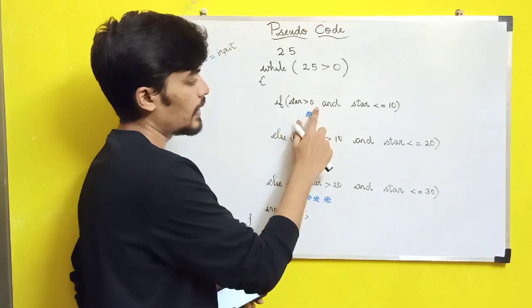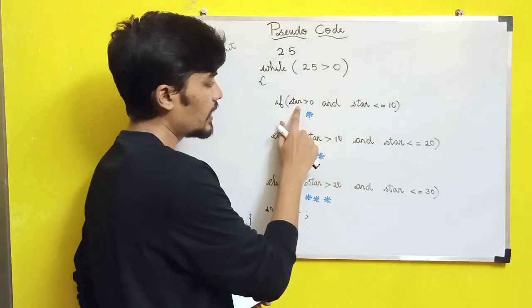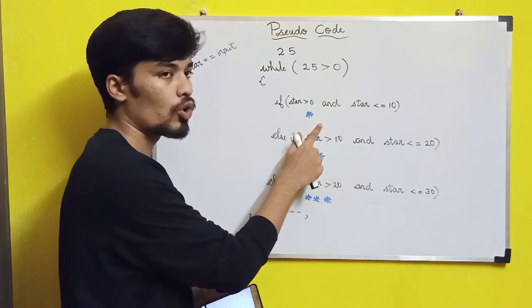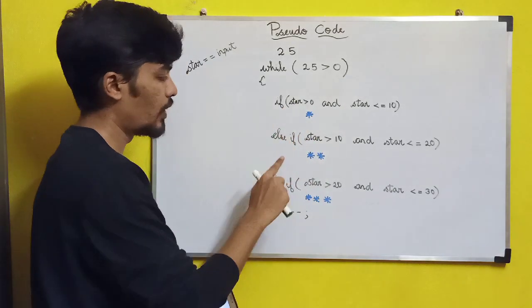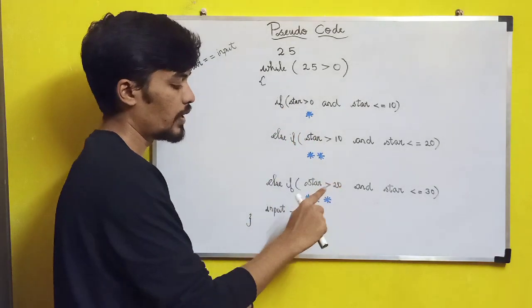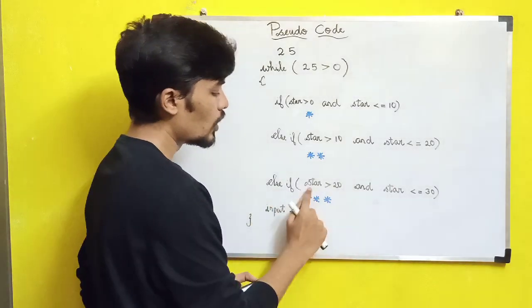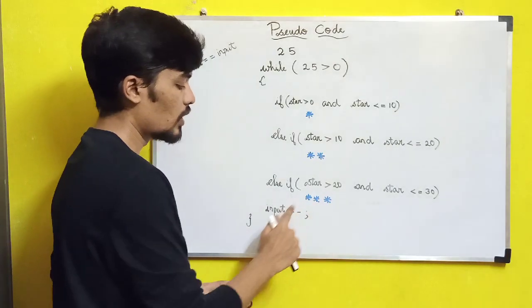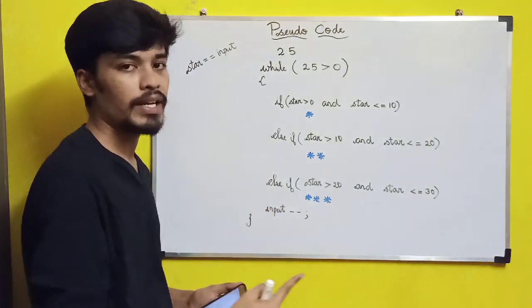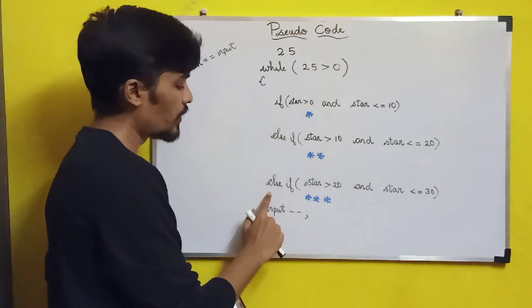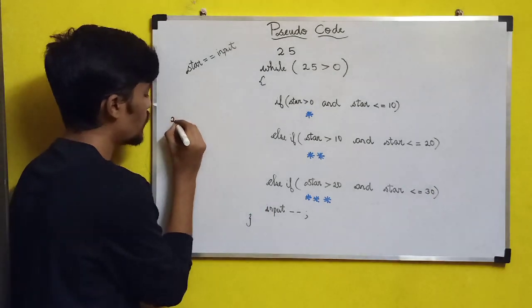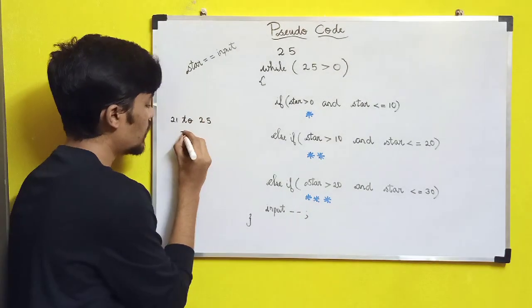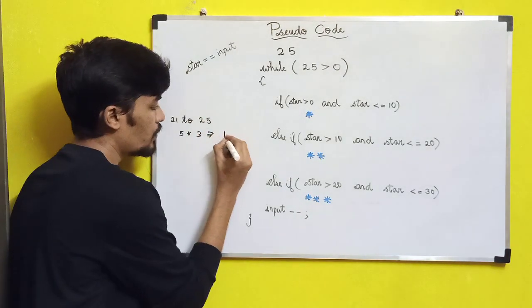25 is greater than 0 and the condition is satisfied. In the last else-if condition, 25 is greater than 0 and 25 is less than or equal to 30 — yes, the condition is satisfied, so you go into the 3-stars print block. 25 decrements by 1 to 24. Values 21 to 25 print 3 stars, so 5 times 3 stars gives 15 stars total.